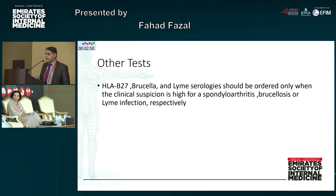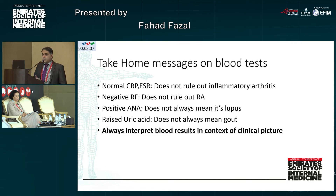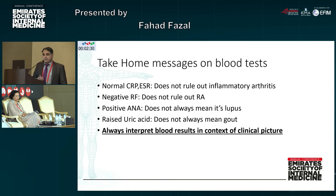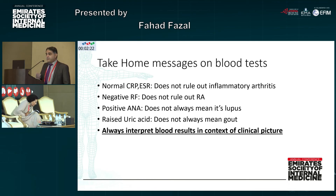Other tests such as HLA-B27, Brucella, and Lyme serologies can be ordered depending upon clinical suspicion. The take-home messages about blood tests: normal ESR/CRP does not rule out inflammatory arthritis; a negative rheumatoid factor does not rule out rheumatoid arthritis; a positive ANA does not mean it's lupus; and a raised uric acid does not always mean it's gout. Always interpret blood results in the context of the clinical picture.